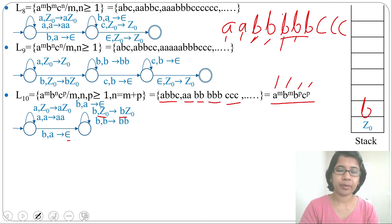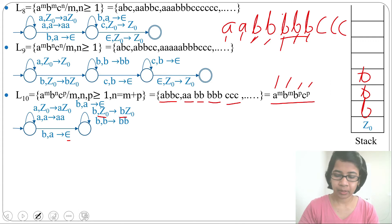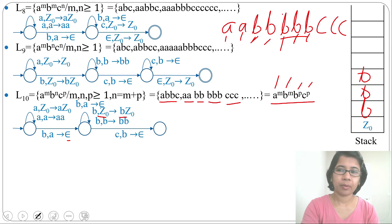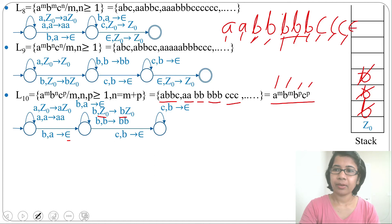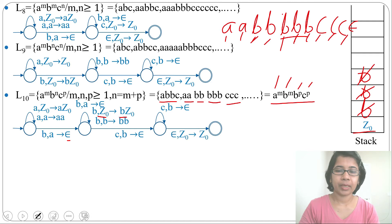For the next b with topmost symbol b, we push b above b: (b, b) → bb. We continue pushing for all remaining b's. Then for c, we pop b: create another state with (c, b) → ε. This is a self-loop: each c pops one b. After all c's pop all b's, with ε input and topmost symbol Z0, we go to the final state: (ε, Z0) → Z0.